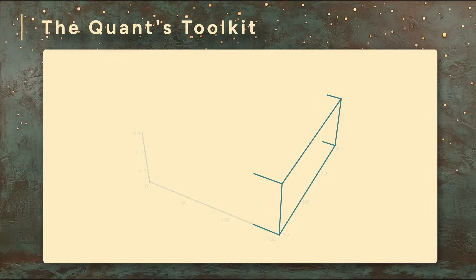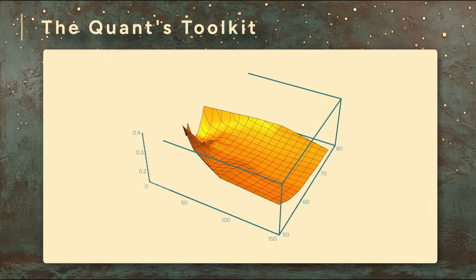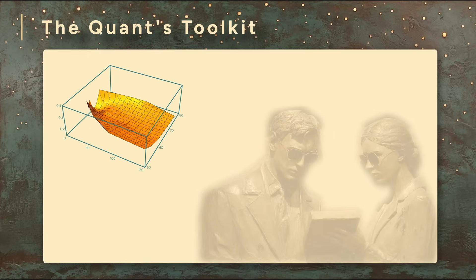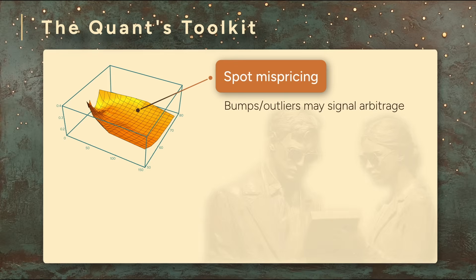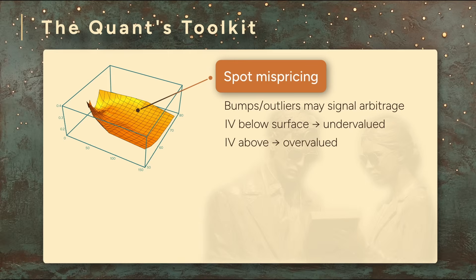We've seen how the volatility surface is a dynamic, real-time map of the market's expectations. So how do quants use it? First, the surface allows us to spot potential mispricing. If there's a bump in the volatility surface, something that looks out of place, that might indicate an arbitrage opportunity. If an option's implied volatility falls below the surface, it might be undervalued. If it's too high, it might be overvalued.